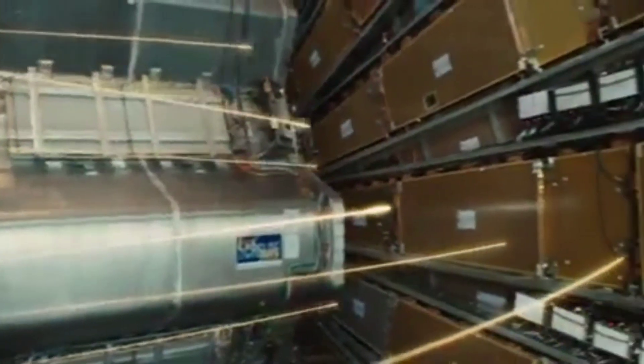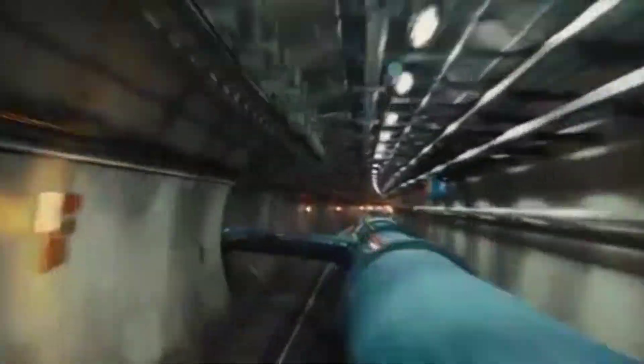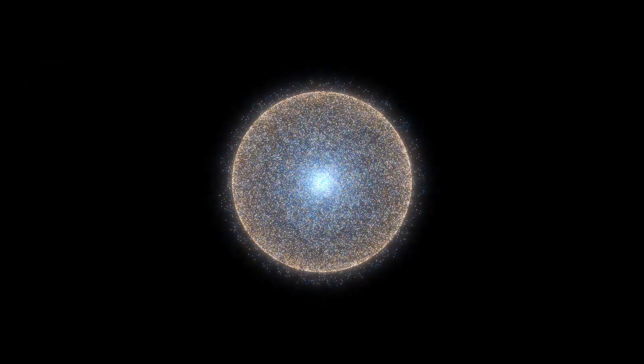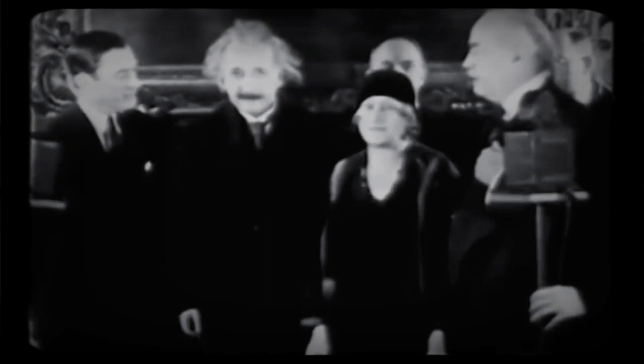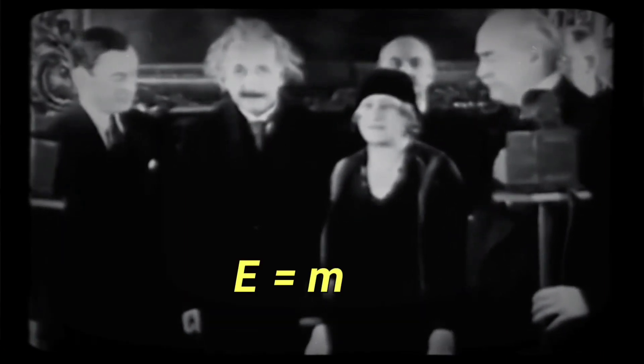The property of anti-matter that makes it an excellent candidate for a bomb is its tendency of total destruction. When exactly equal quantities of anti-matter and matter come into contact, they annihilate one another, releasing gigantic amounts of energy. This process is the same as Einstein's mass equivalence relationship of E equals mc squared.